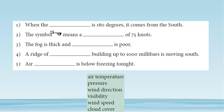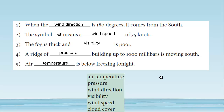Okay, learn something new — that is great. So now we're going to put these terms into the sentences: when the wind direction is 180 degrees, it comes from the south. The symbol here means a wind speed of 75 knots. The fog is thick and visibility is poor. A ridge of high pressure building up to 1,000 millibars is moving south. And then air temperature is below freezing tonight.